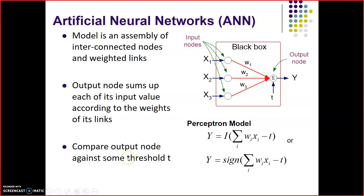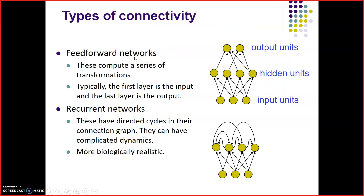Compare the output node against some threshold t. What are the types of connectivity? There are two types: number one is feed forward network, and number two is recurrent network. Feed forward networks compute a series of transformations — input units to hidden units to output units. The second form, recurrent networks, have the output going back to the input. These have directed cycles in their connection graph and can have complicated dynamics — more biologically realistic.